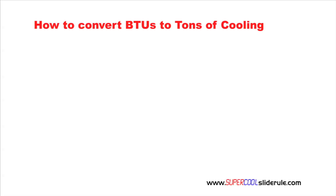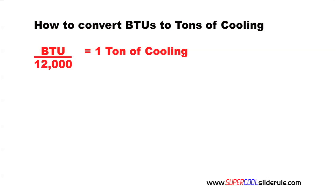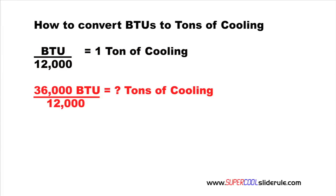This is a very simple equation. We simply divide the total BTU output by 12,000 to obtain tons of cooling. In this example, we will use 36,000 BTUs and convert this to tons of cooling.